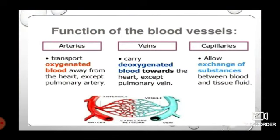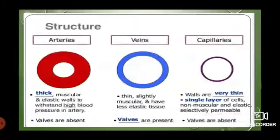The function of blood vessels: arteries transport oxygenated blood, veins transport deoxygenated blood, and capillaries allow the exchange of substances between blood and tissue. Regarding structure: arteries are thick-walled, veins are thin-walled, and capillaries are very thin. Valves are present in veins but absent in capillaries.